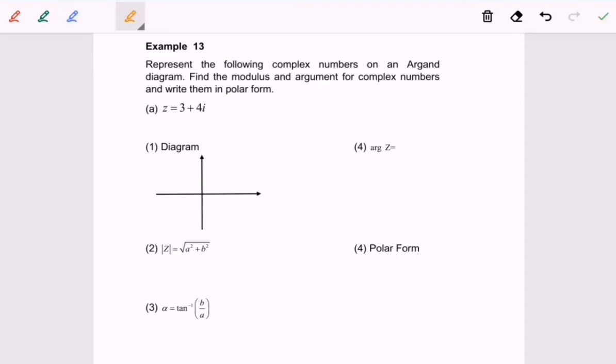Kindly refer to question A, given that Z is equal to 3 plus 4i. As we all know, this is an imaginary axis, and this is a real axis. So now we are going to locate the location of 3 plus 4i. So it will be in the first quadrant.